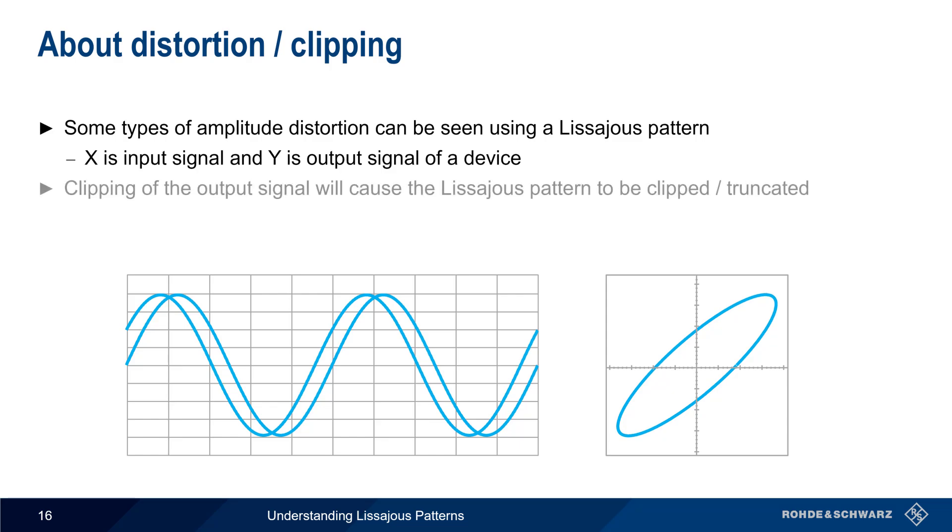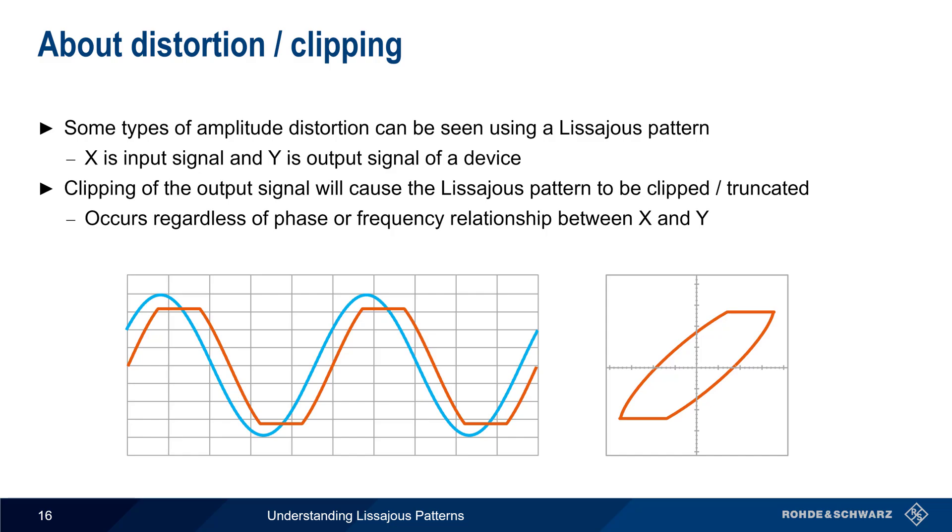If however, the output signal is clipped or truncated, this will also cause the Lissajous pattern to be clipped or distorted, as shown here. This amplitude-related behavior can easily be seen regardless of the phase or frequency relationship between the two channels.